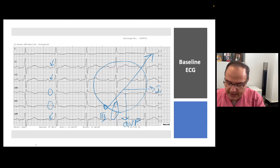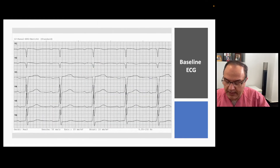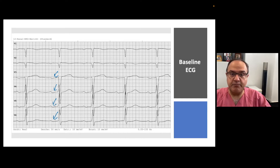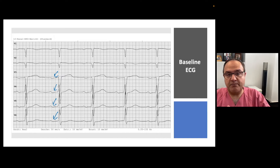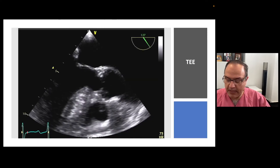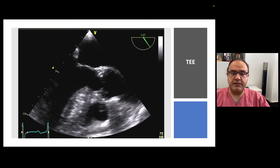Looking at the precordial leads — especially V3, V4, V5, and V6 — the left atrial component of the P wave is also negative, which is compatible with interatrial conduction through the coronary sinus.